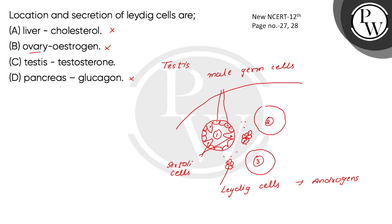The pancreas has both exocrine and endocrine portions. Pancreatic juice helps digestion from the exocrine part, and hormones target different organs from the endocrine part.